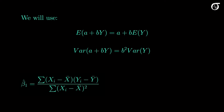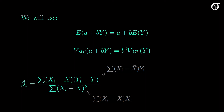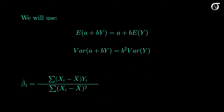Recall the least squares slope estimator, which is the sum of products over the sum of squares of x. The sum of products can be written one way, and the sum of squares of x can be written another way — I showed that in detail in the video where I derived this estimator. I'm going to write the slope in a form that gets it down to just the y sub i as random variables, so we don't have to deal with y bar, which is also a random variable and makes life a little more problematic.